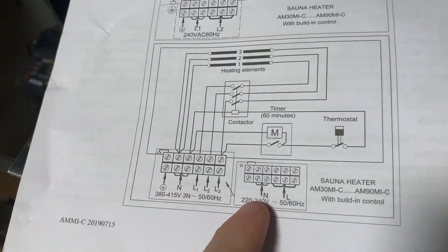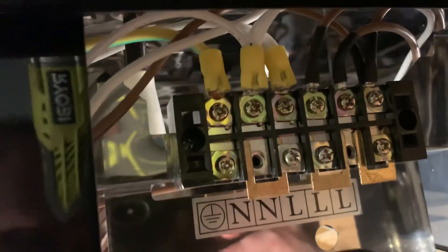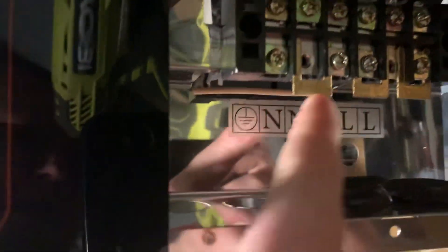So basically you'll have one line going into the neutral, the other going into line one. And it's pretty obvious if you look at it there's different jumpers in here and you'll need to remove them based on your application.